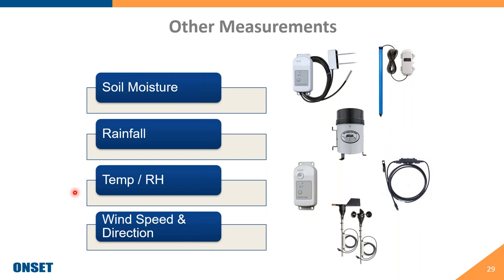For temperature and relative humidity, we offer a Bluetooth temp/RH sensor used through the app, a plug-and-play smart sensor for RX stations, and USB station options. For wind speed and direction, we offer plug-and-play smart sensors that connect to RX stations or USB micro stations for on-site offloading.